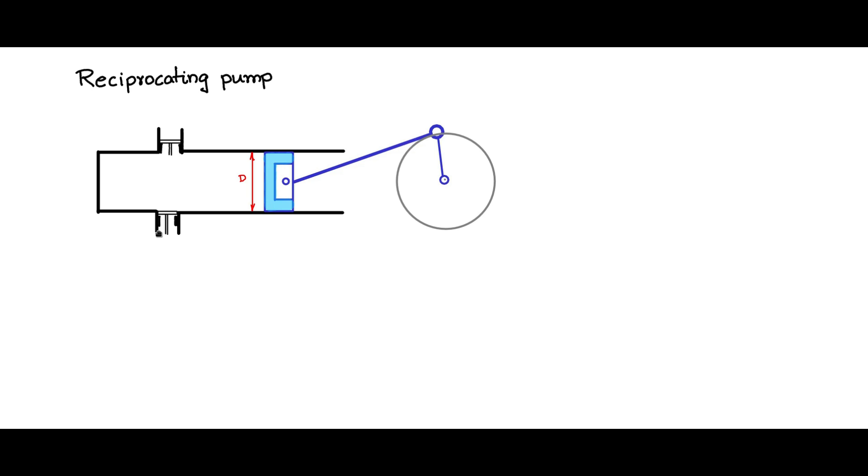Here there is no reverse flow. This is the inlet valve. So this is the inlet and this is the outlet.